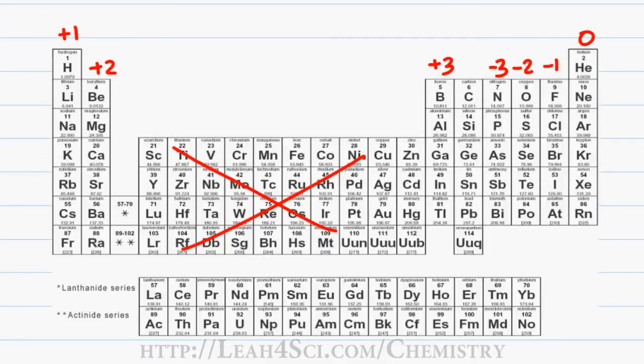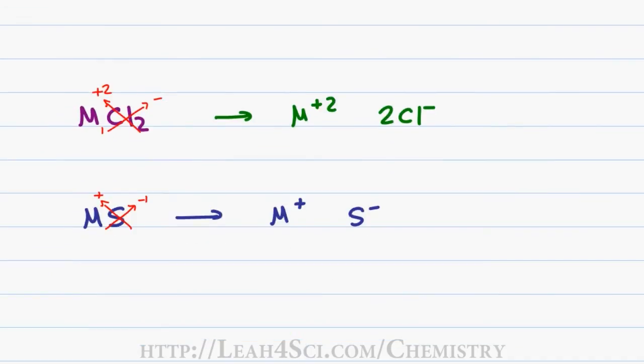Sulfur is in group six and should have a charge of -2. So how do we get the charge of -1? Remember that the charge just gives you the lowest whole number ratio.